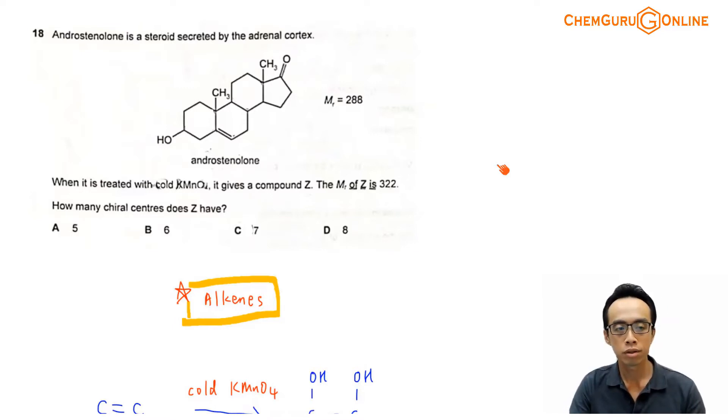Now question 18 goes something like this. Androstanolone is a steroid secreted by the adrenal cortex. The compound is given here, molecular mass is 288. When it is treated with cold KMnO4, which is an oxidizing agent, it gives a compound Z. And the MR for Z is 322.